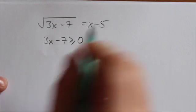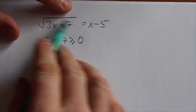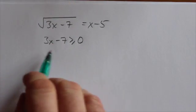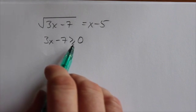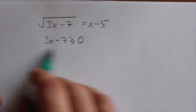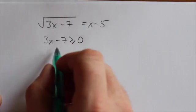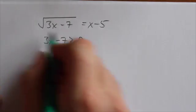So that means that 3x minus 7, what's underneath the radical, has to be positive or zero, because you can take the square root of zero. This has to be positive because I have to take the square root of a positive.